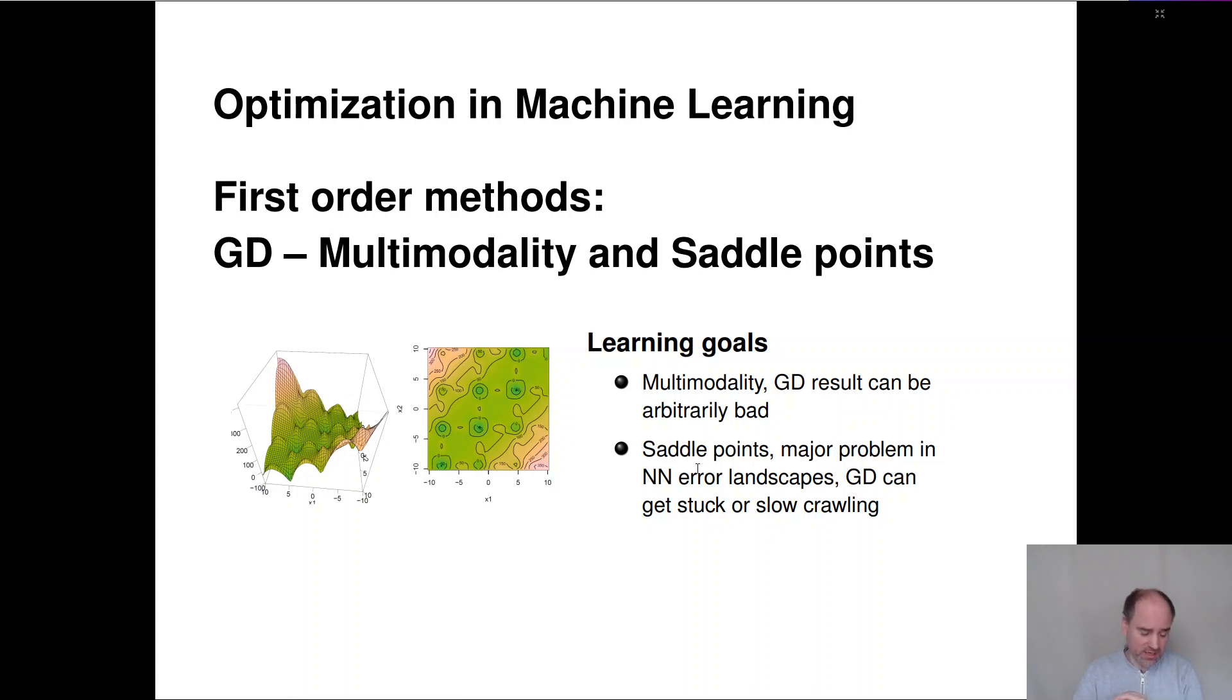Usually we need an extra mechanism in gradient descent to escape these saddle points and we'll look at that when we later discuss momentum and more advanced algorithms like Adam. But for now, let's look at the problems. Let's dive right into this.